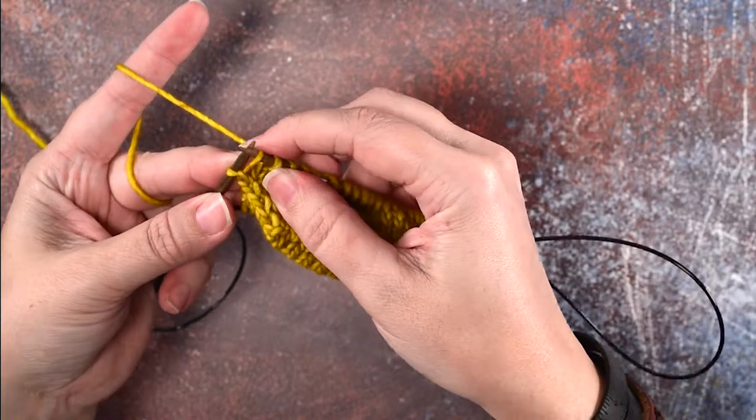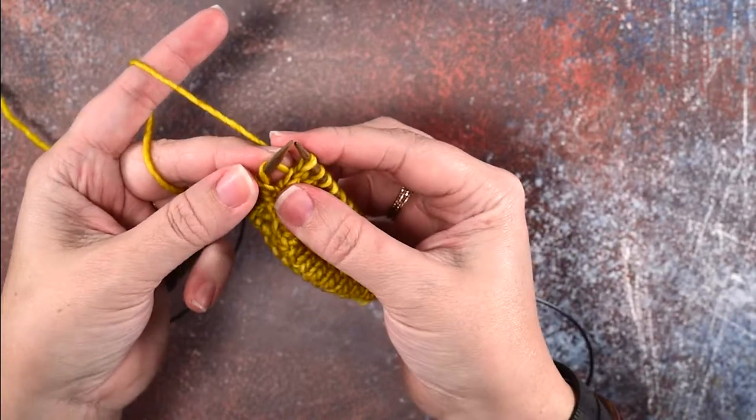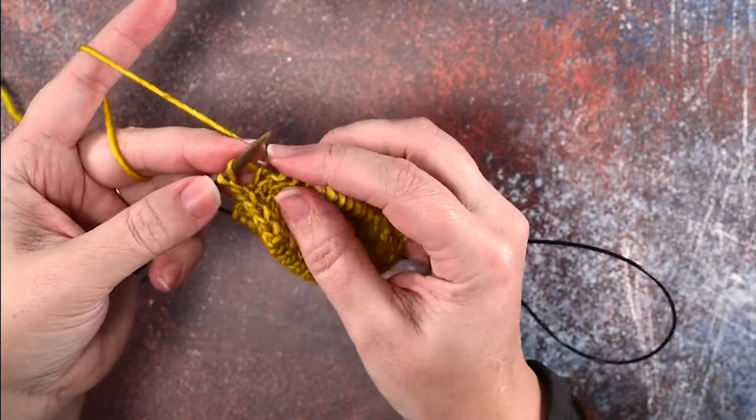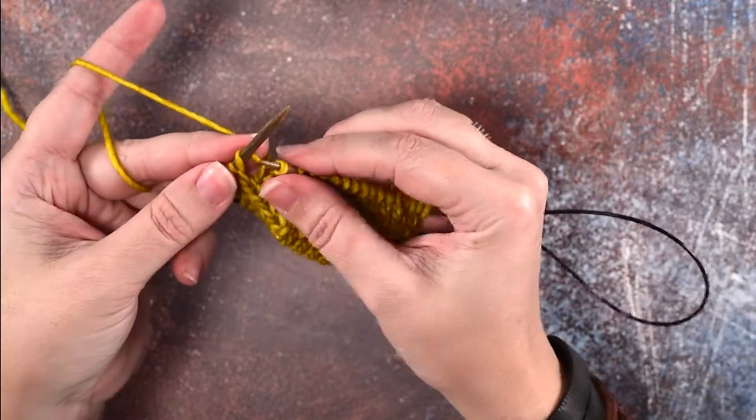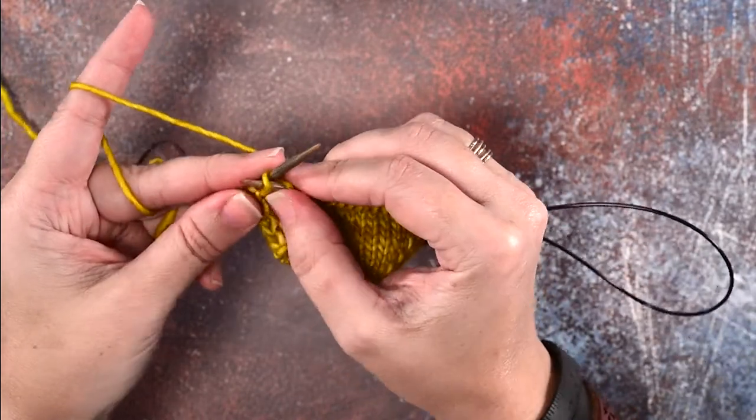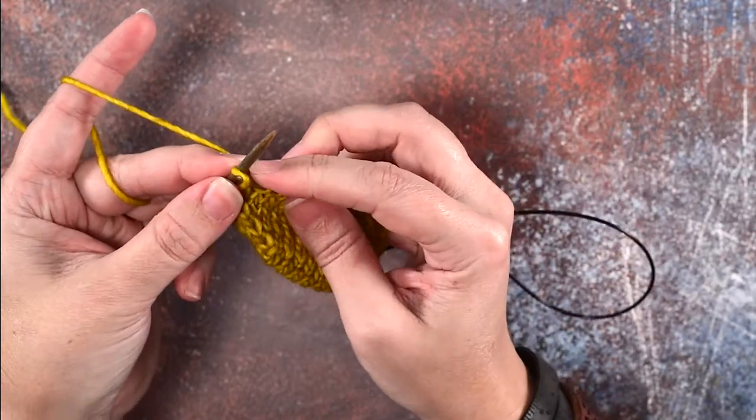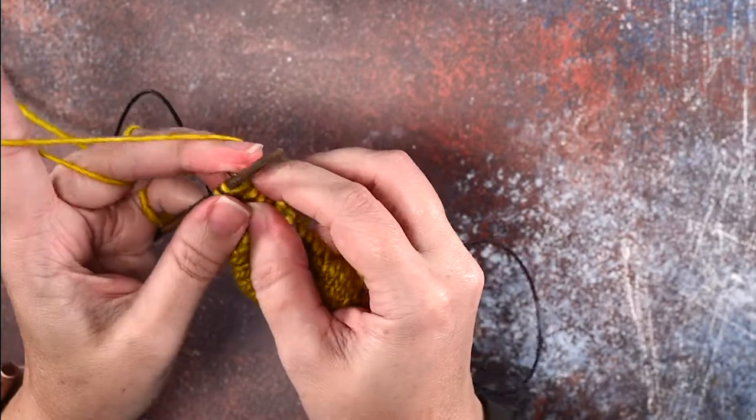We're gonna place that bar on our left hand needle just purlwise. Now we want to knit into the front loop of that bar that we just picked up, and that can be a little tricky. That bar is a little bit tight, so you can use your right hand needle to kind of put some slack into that bar, pull it apart, and now we're going to knit into the front of that bar.